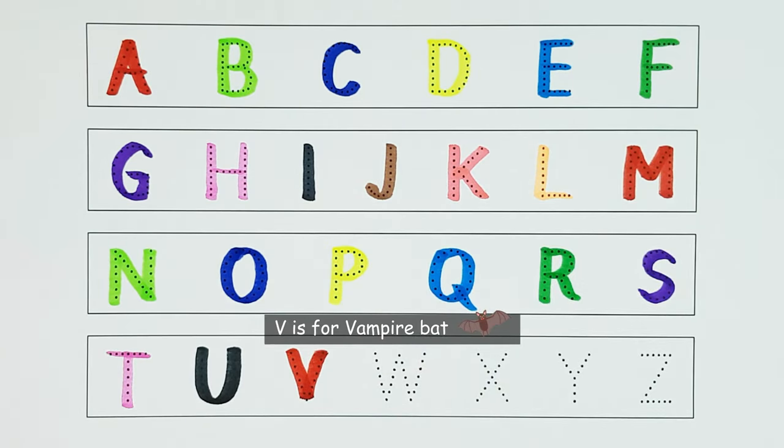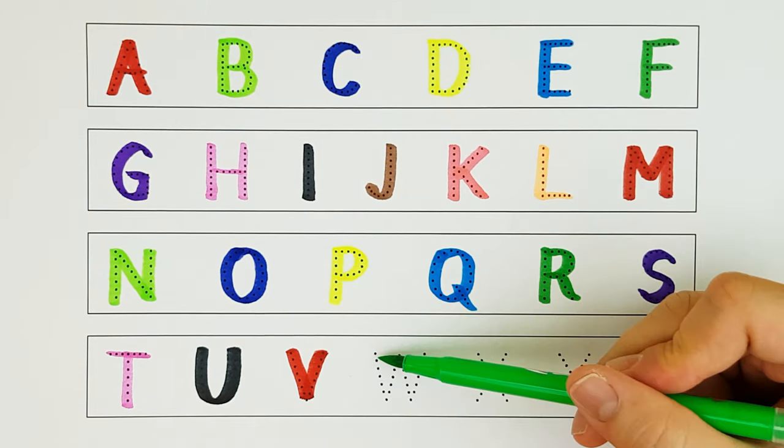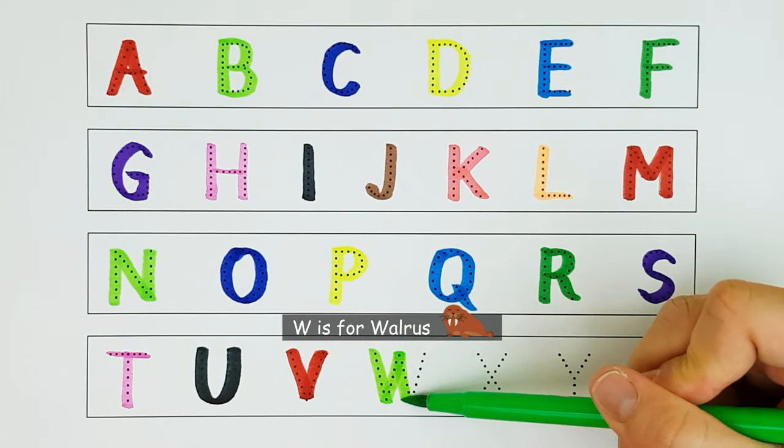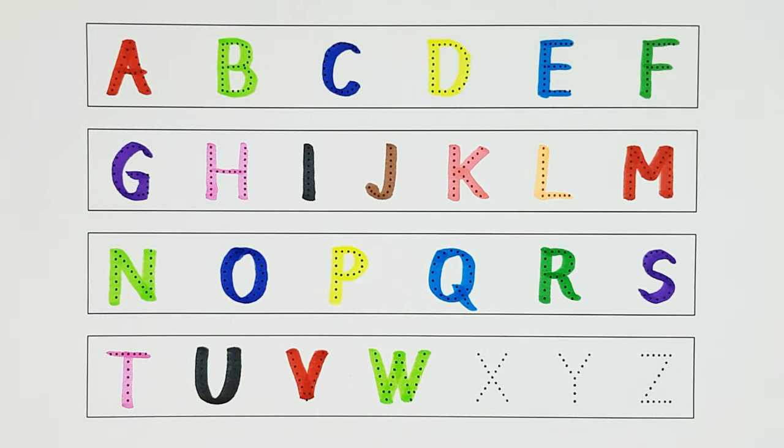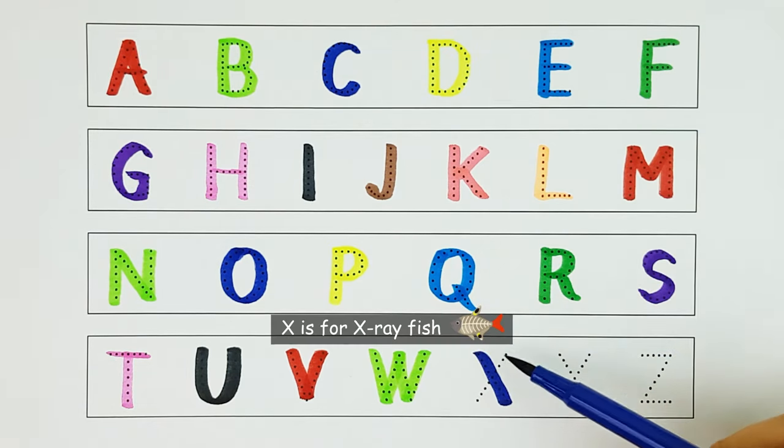V. V is for vampire bat. V. W. W is for walrus. W. X. X is for x-ray fish. X.